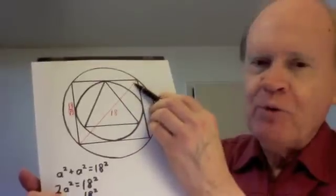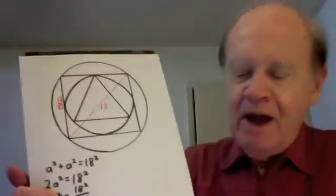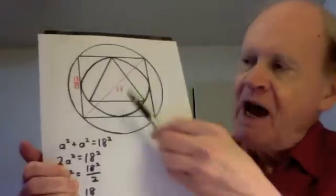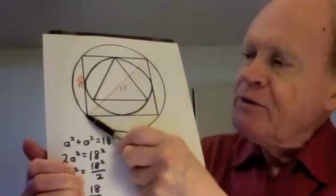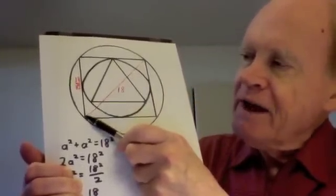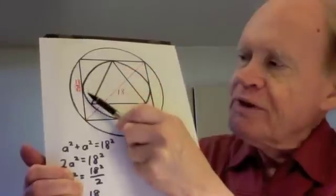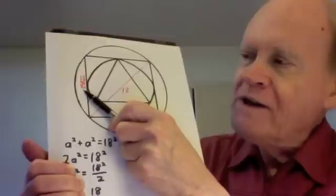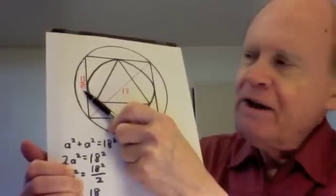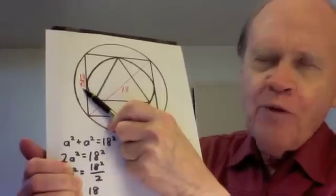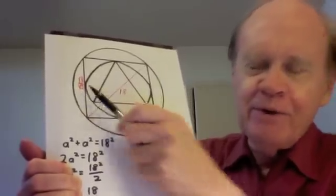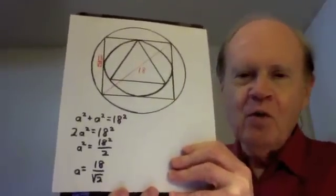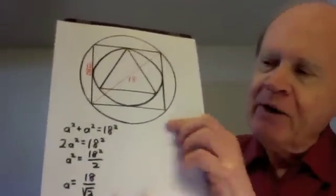This is a special right triangle of geometry, an isosceles right triangle. The relationship of the sides is that when you have the hypotenuse, to get either leg, you divide the hypotenuse by the square root of two. One side of the square is 18 over the square root of two. If you're not familiar with those relationships, you can work that out by the Pythagorean equation.